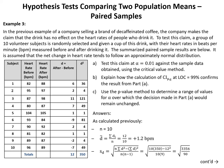In Example 3, we return to the example of a company selling a brand of decaffeinated coffee that claims the drink has no effect on the heart rates of people who drink it. A group of 10 volunteer subjects is randomly selected and given a cup of this drink, with heart rates in beats per minute measured before and after. The summarized paired sample results are provided, and it is assumed that the net change in heart rate follows an approximately normal distribution. Part A tests this claim at alpha equals 0.01 using the critical value method.